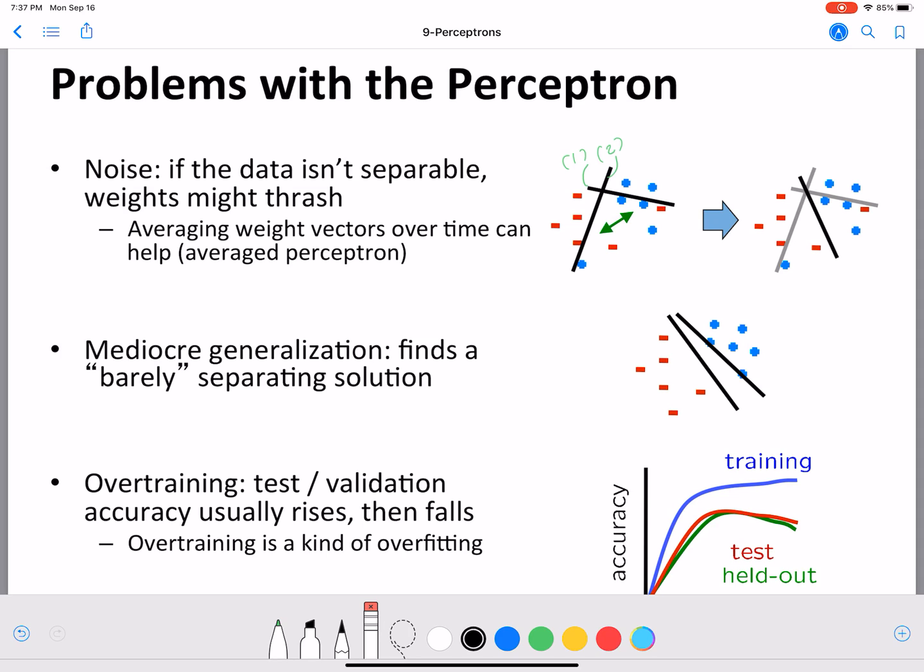For example, we have these two lines here, one and two, both separate these two sets of points. We can clearly see that line number two is the better line here out of these two because it is having more distance between both the sets of points.